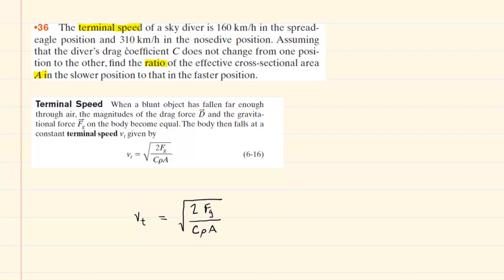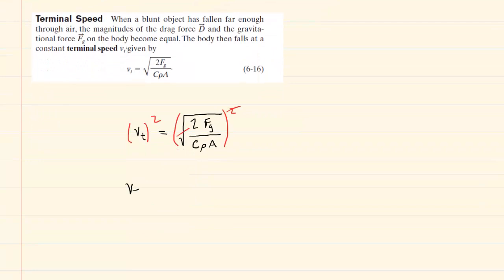We've recopied the equation here. To solve for area, we would first need to square both sides of this equation so that the square root on the right side will cancel out. So now we have the terminal speed squared is equal to 2fg divided by c rho a.